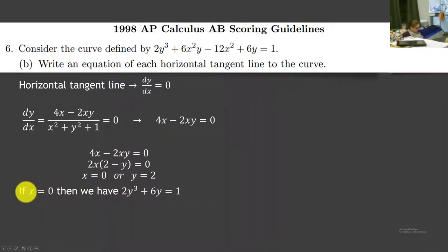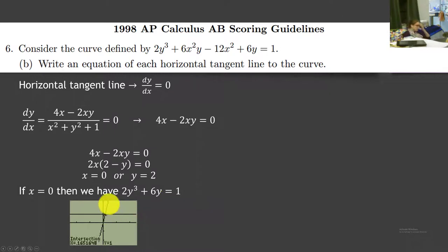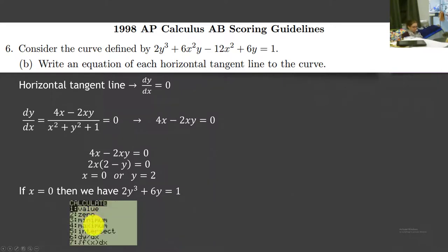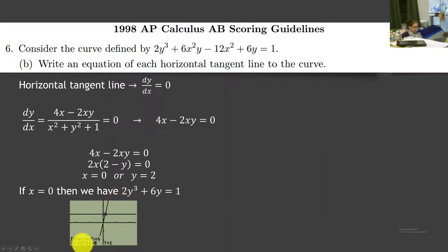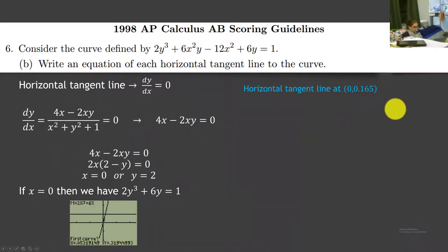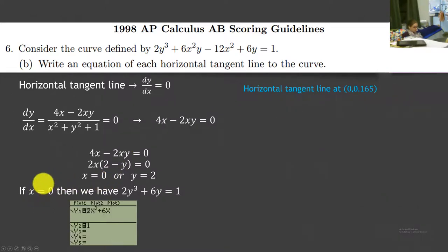Let's test both. If x equals 0, we plug back into our original function — anything with an x goes away. We're left with 2y³ plus 6y equals 1. We can use the calculator to solve this: graphing the function and finding the intersection with y equals 1 gives us approximately 0.165 as the y-value. Since we know the x-value is 0, we do have a horizontal tangent line at the point (0, 0.165).